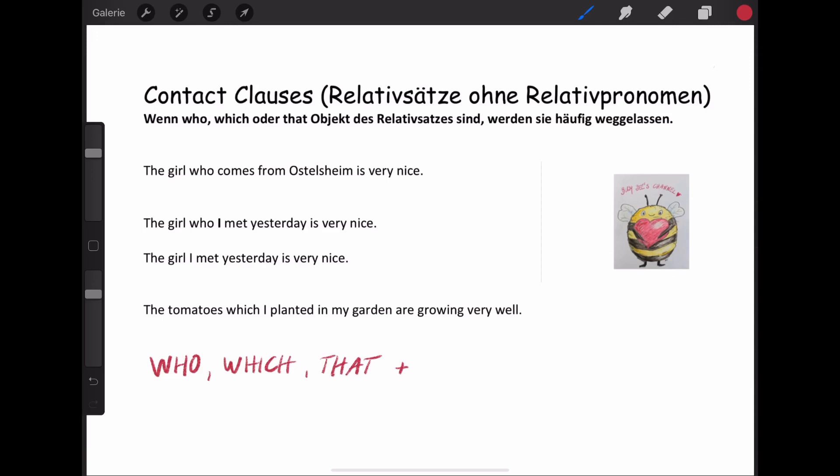Have a look at that. The first sentence is a very ordinary relative clause. The girl who comes from Östelzheim is very nice. Again, I have the who because I describe a person. The girl who comes from Östelzheim is very nice. That's a normal relative clause. We are not talking about that. Have a look at the second sentence. The girl who I met yesterday is very nice. If you have a person after the who, which or that, you can skip the who, which or that, you can leave it out. That means, that looks much better. The girl I met yesterday is very nice.